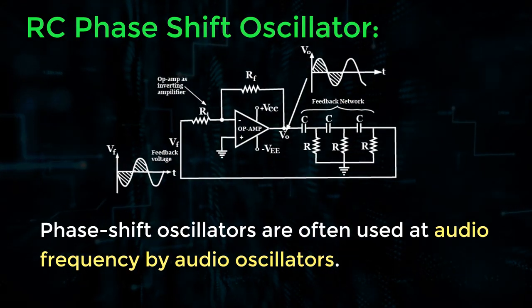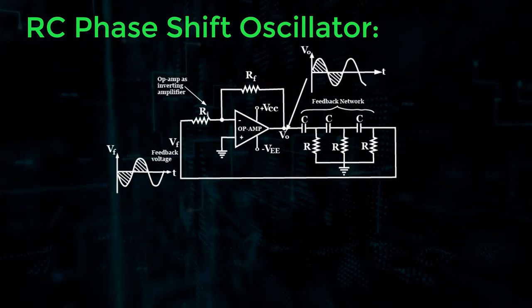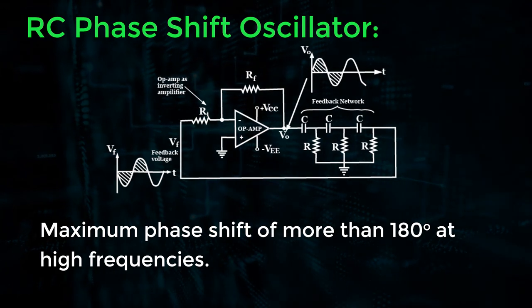Phase shift oscillators are often used at audio frequency by audio oscillators. The filter produces a phase shift that increases with the frequency.